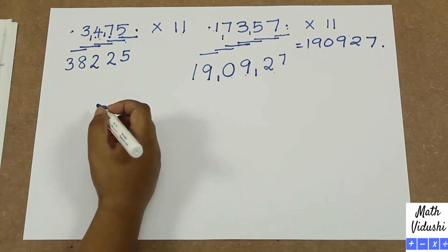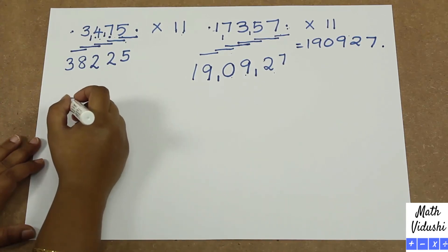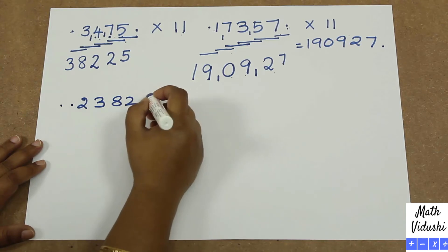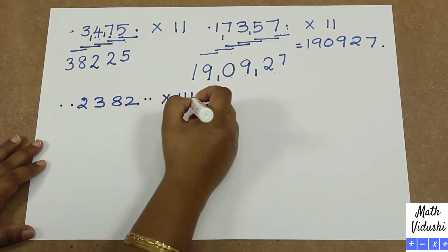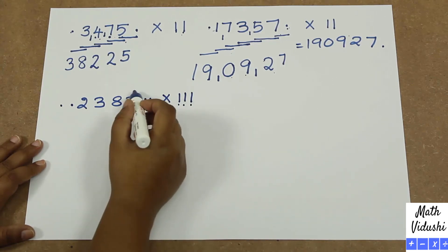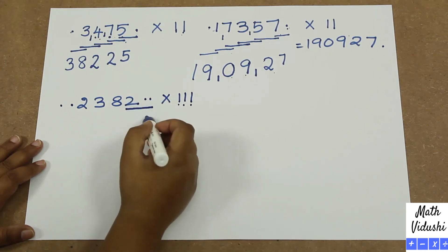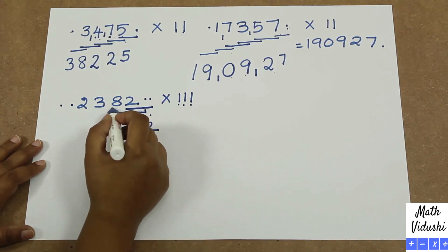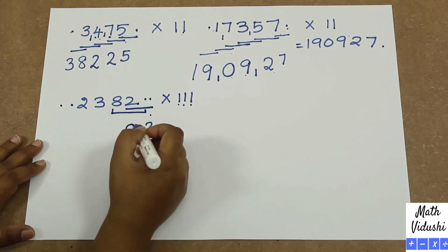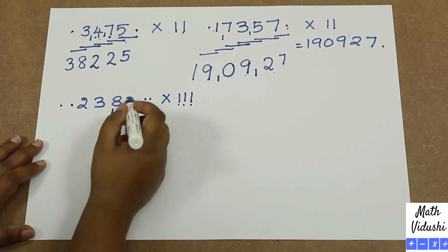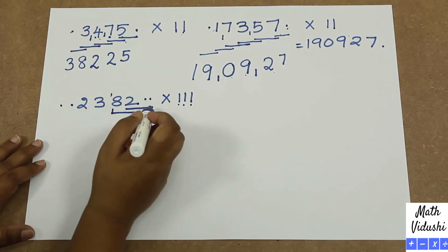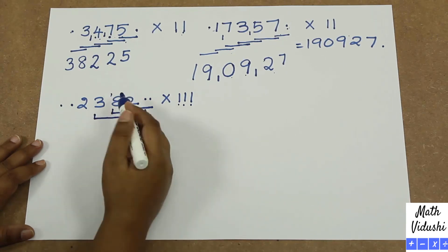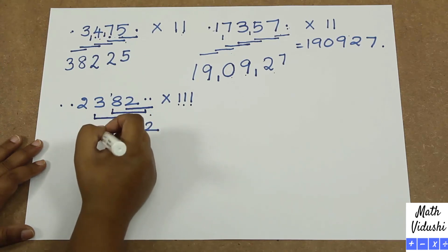Now let's try with 111, which will give us a carryover. With 111 you have to put 2 dots on each side. Let's take 2382 multiplied by 111. Because there are three 1s here, you have to take 3 numbers at a time. Starting from the right, 0 plus 0 plus 2 gives you 2. Then moving to the next group: 2 plus 8 plus 3 which is 13, so you write 3 here.